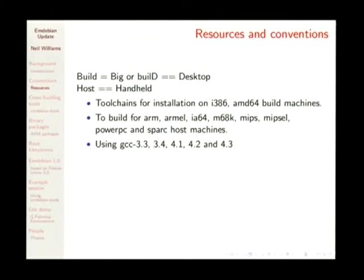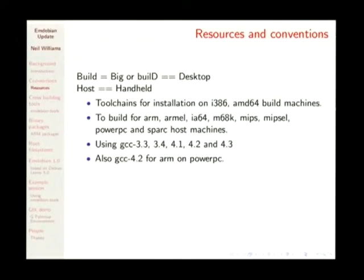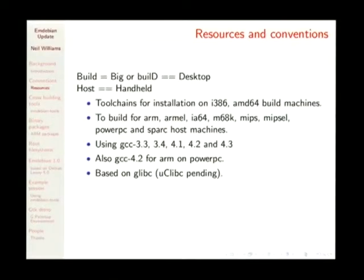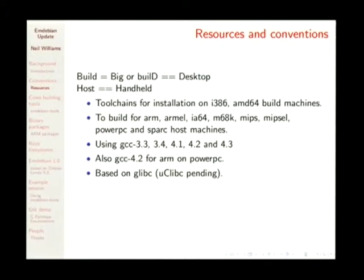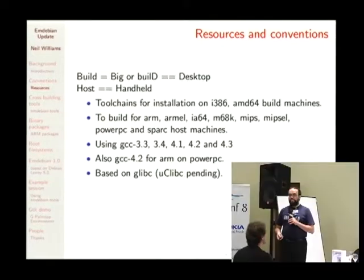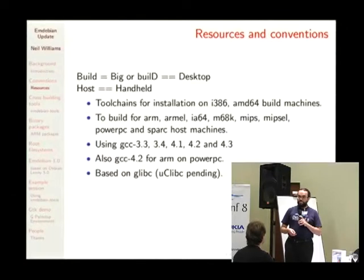We've got a full range of compilers, and as soon as Lenny releases we're going to have to add GCC 4.4 to that. We don't really support cross-compiling on PowerPC anymore — that was my old laptop and it really struggled to build a toolchain for itself, so we'll leave it at 4.2. We are sticking to GLibC. UCLibC is not in Debian at the moment — it will hopefully be back in Debian sometime after Lenny. There are various copyright licensing problems, but there is outline support for UCLibC already in the tools.